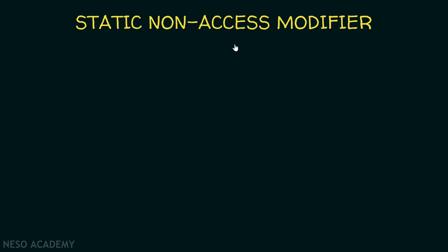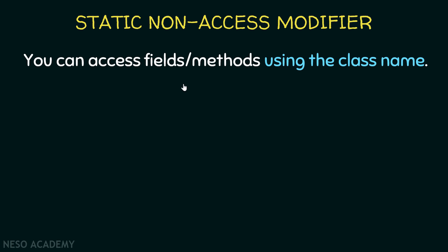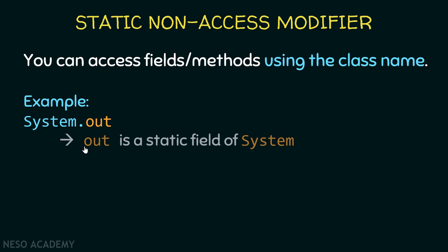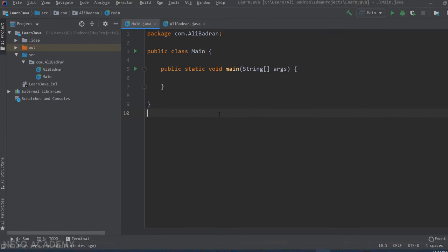Now let's have a look at the static keyword. It is a non-access modifier. Whenever we use the static keyword, we will be able to access fields and methods using the class name. For example, we already know that we can type System.out — we are accessing the out field using the name of the System class. This means that out is a static field of System. If it is not a static field, we will not be able to access it using the name of the class.